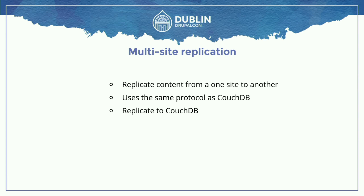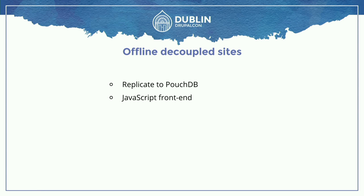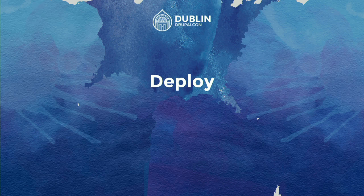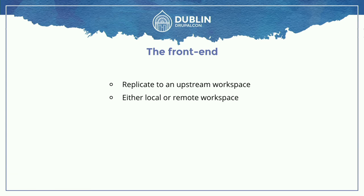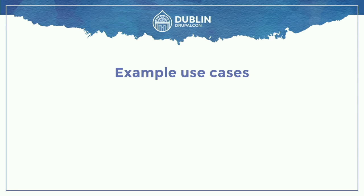PouchDB is a JavaScript application, so you can run it for offline applications or decoupled Drupal sites — it replicates down to JavaScript local storage and runs a fully offline application. Then there's the Deploy module itself, which is really just a front end now. It's a way of replicating to your upstream workspace. With Workbench Moderation it replicates when you publish; with Deploy it replicates when you click the deploy button, just as it always has in previous versions.